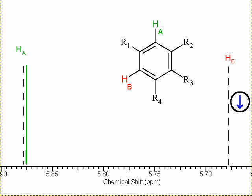Alternatively, Hb could be aligned against the applied magnetic field — it could be spin down — and therefore from the perspective of Ha, it will experience slightly less magnetic influence than before, and so its peak will be moved to a slightly lower chemical shift.